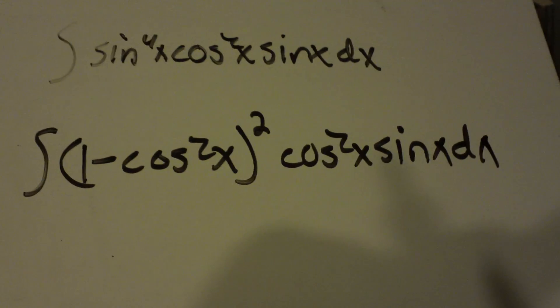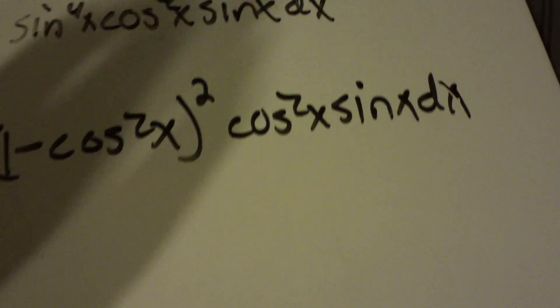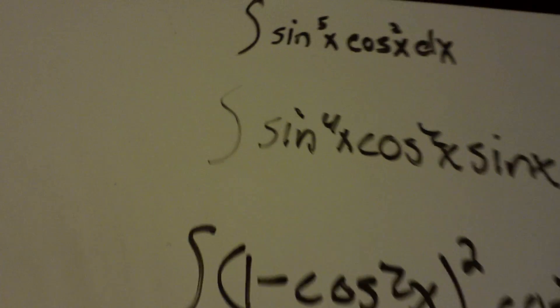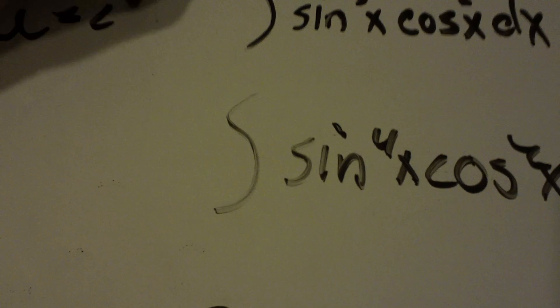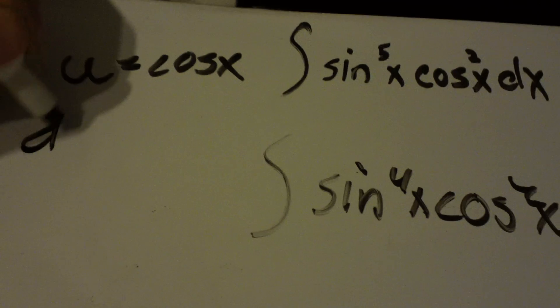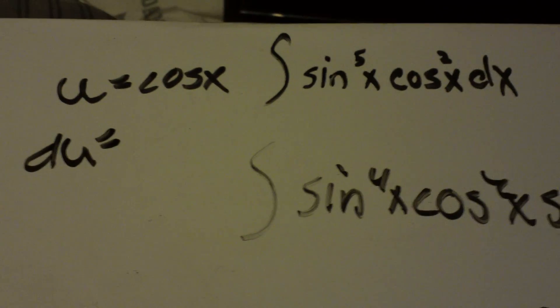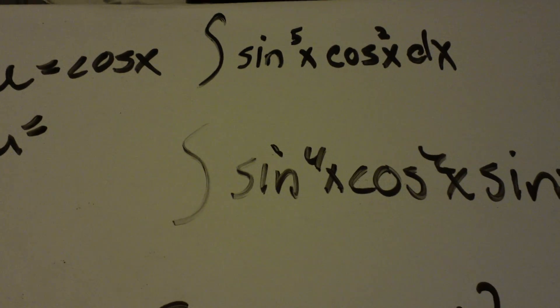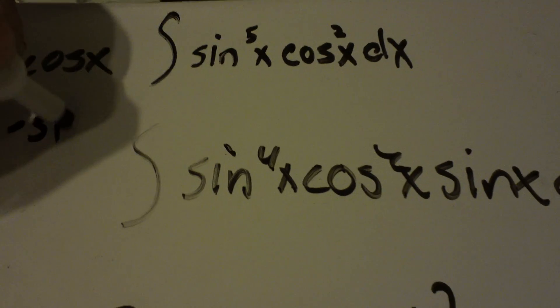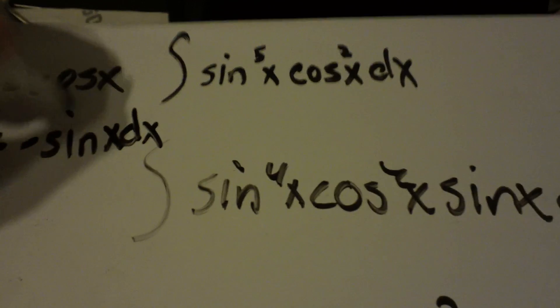Alright, now you got it to where you want it. Now you can use your u, and your u is going to be cosine. And du is just the derivative of cosine, so the derivative of cosine is negative sine x. Not sine. So it's negative sine x, and don't forget your dx on the end.